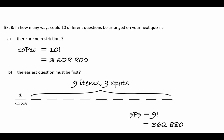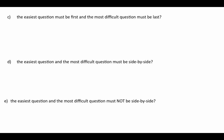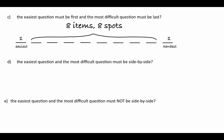If we put the easiest question first and the toughest question last, both are locked — one option each — leaving 8 items for 8 spots: 8P8 = 8! = 40,320. Now what if the easiest and hardest questions must be side by side? They can be anywhere together, so we treat them as a package with the eight others — nine items to arrange.